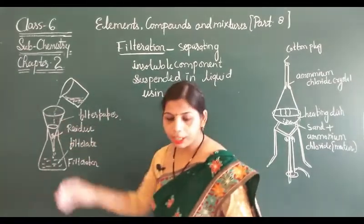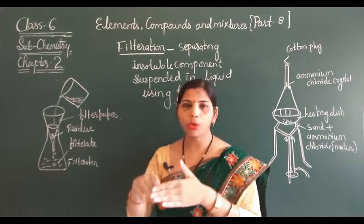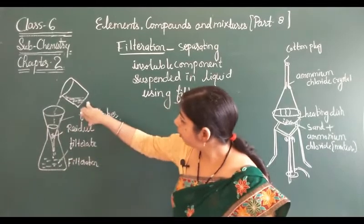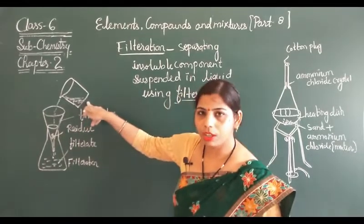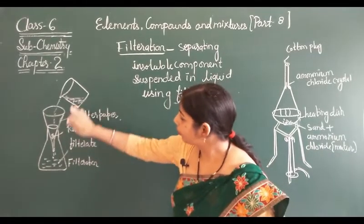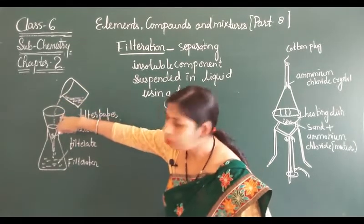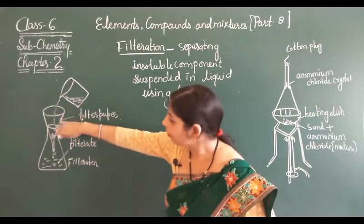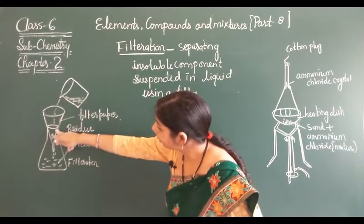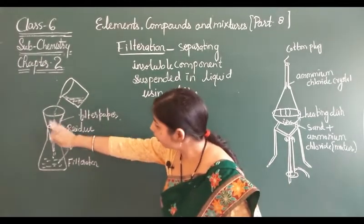Here is a filter paper. It is round in shape and is made into a cone shape. We put it on a beaker. This is the muddy water that we have to separate. The muddy water is poured into this filter paper, and the mud remains in the filter paper.